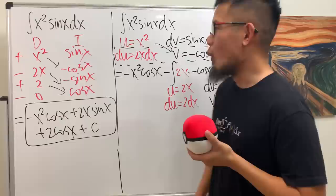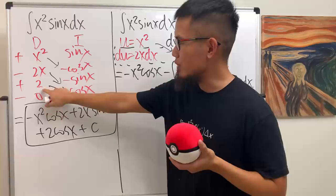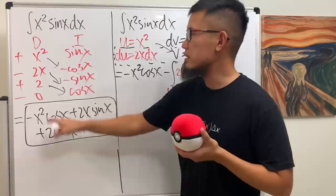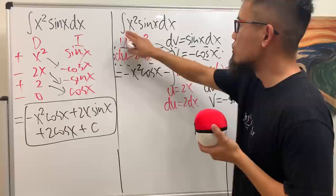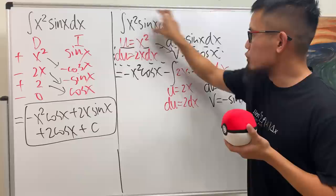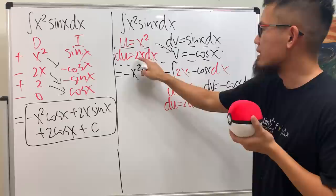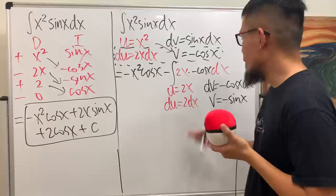The beauty of the DI method is that it's a very nice organization of integration by parts. x squared differentiated gives 2x, differentiated again gives 2, differentiated again gives 0. When you get a 0 in the D column, that's the first stopping condition. The plus, minus, plus, minus on the side comes from the formula: originally our integral is positive, and integration by parts gives us a minus another integral, which is why we have the minus.